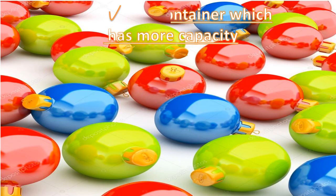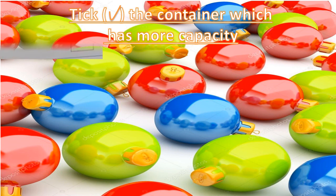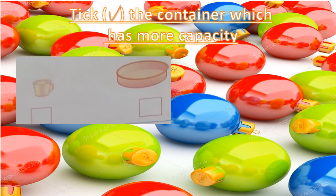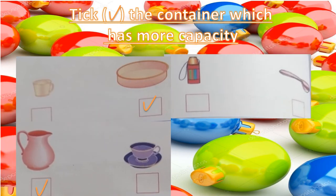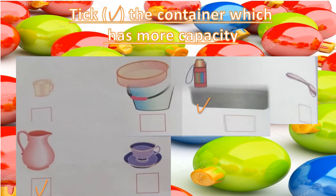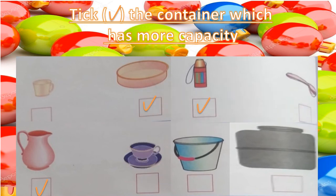Take the container which has more capacity. See, here, plate, water bottle, mug, and bucket are bigger than other containers. So, they have more capacity.